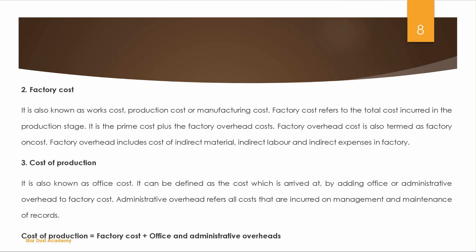We have three elements of prime cost. Next, we have Factory Cost, also known as work cost, production cost, or manufacturing cost. The factory cost represents total costs incurred in the production stage. It equals prime cost plus factory overhead cost.